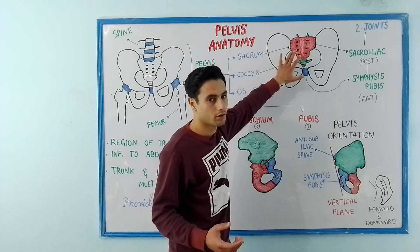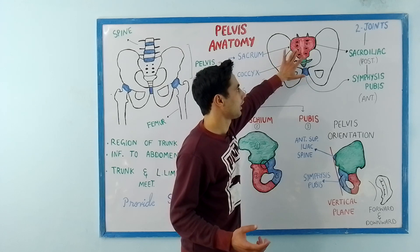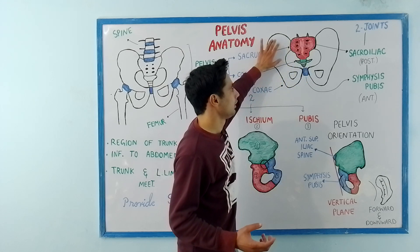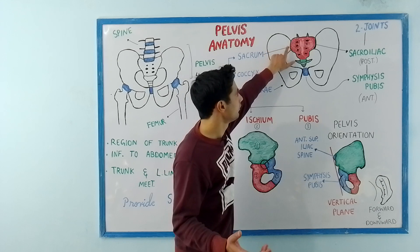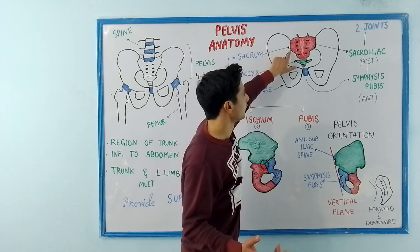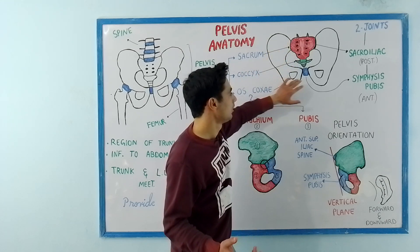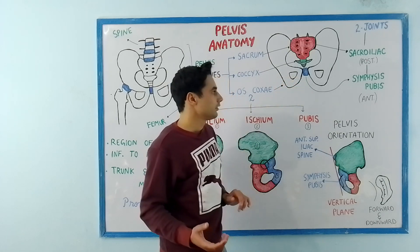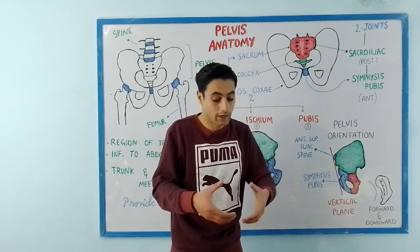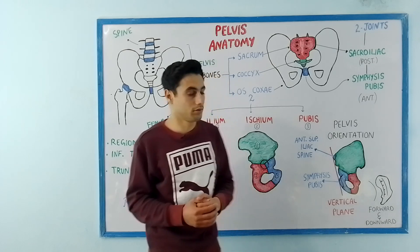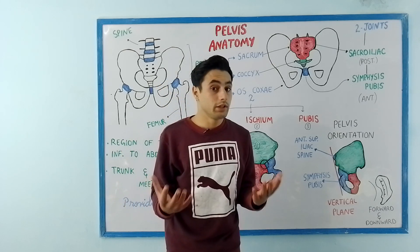The sacroiliac joint is formed posteriorly. Have a look at this diagram — the sacroiliac joint means the joint is formed between the sacrum and the iliac part of the hip bone. This joint right here is the sacroiliac joint. Symphysis pubis — the two hip bones join anteriorly to form this.